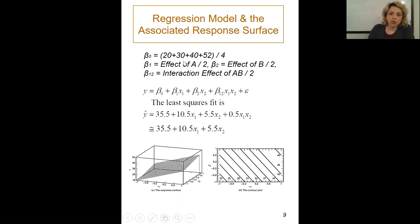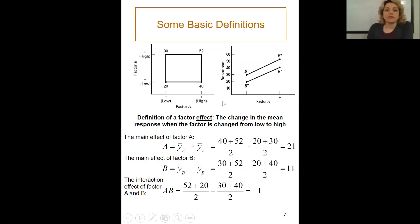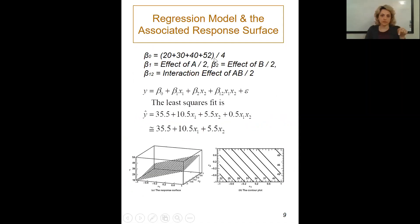For β₀ (beta null), you add all the response values — 20, 30, 40, 52 — and divide by four (since there are four of them). So for the first example: β₁ = 21/2 = 10.5, β₂ = 11/2 = 5.5, β₁₂ = 1/2 = 0.5, and β₀ is the average of all four responses.